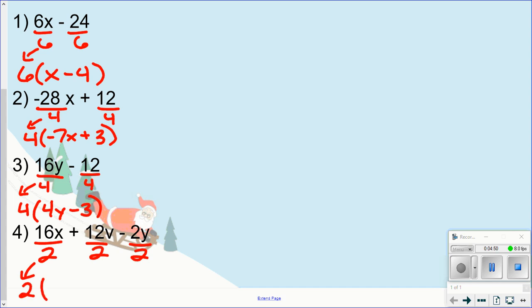16x divided by 2 is 8x. Bring down the plus sign. 12v divided by 2 is 6v. Bring down the minus sign. And 2y divided by 2 is 1y, or just y. And that's it.